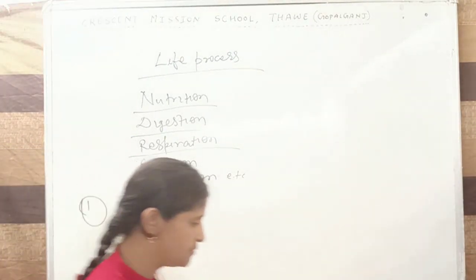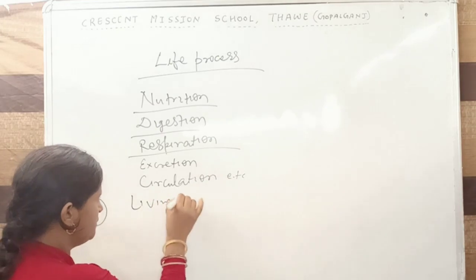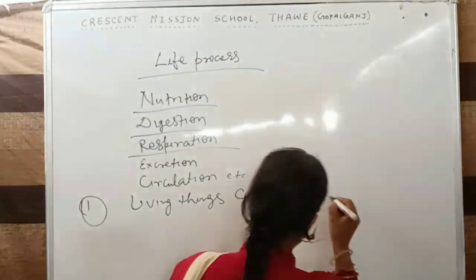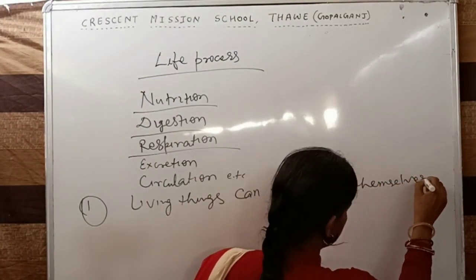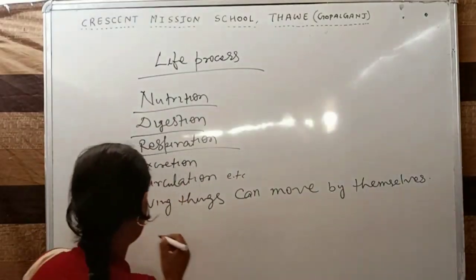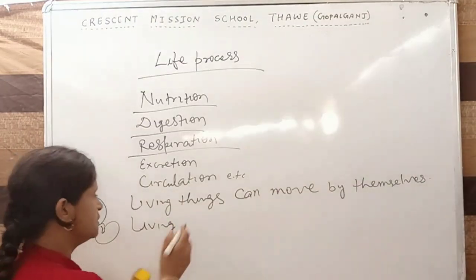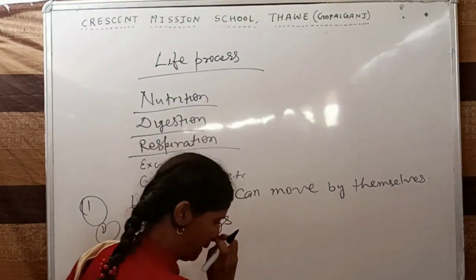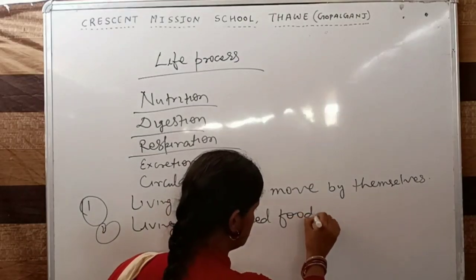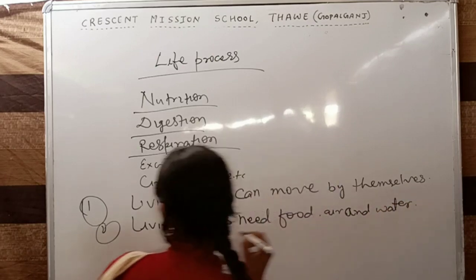The first character is: living things can move by themselves. Second, living things need food, air, and water.